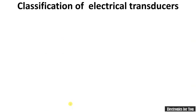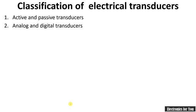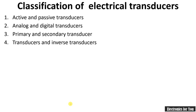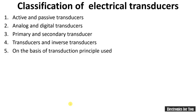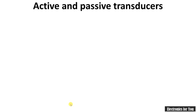Now let's see the classification of electrical transducers, which is the main topic of today's video. They are classified as: active and passive transducers; analog and digital transducers; primary and secondary transducers; transducers and inverse transducers; and lastly, on the basis of transduction principle used.